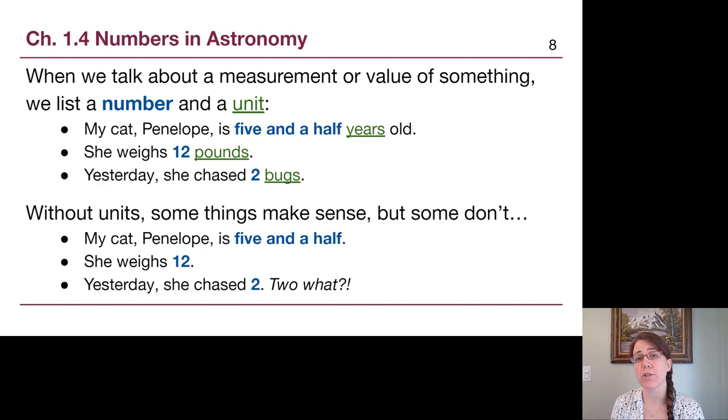Now, in general, in any science class, whenever we're talking about a measurement of some kind, we always need a number and a unit. That unit is the thing that gives that number context. So a couple of examples. My cat Penelope is five and a half years old. Five and a half is the number, and years is the unit that tells us what that number actually means. She weighs 12 pounds. 12 is the number, and pounds is the context that tells us what that number means.